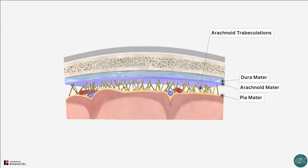The arachnoid layer is a thin transparent membrane which serves to cushion the central nervous system. Unlike the innermost layer, the pia mater, it doesn't follow the gyral and sulcal contours of the brain and provides a loose fitting covering.